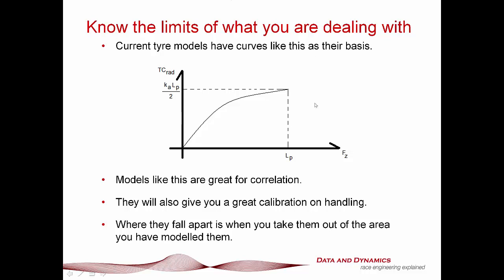For example, if this comes from a car with wheel rates of, say, 150 newton millimetres front and rear, and we all of a sudden start shoving in 50 newton millimetre wheel rates at the rear while keeping 150 at the front, we've pushed that tyre model into an area we don't know about. Consequently, all you're doing is guessing. And that, ladies and gentlemen, is probably the biggest trap that I see for novice simulation users.